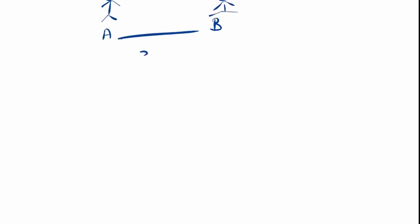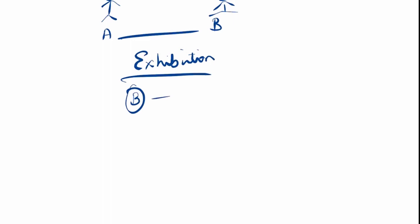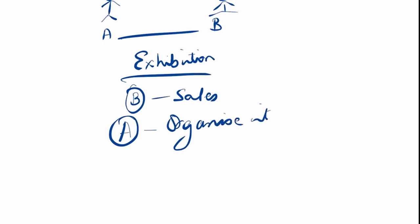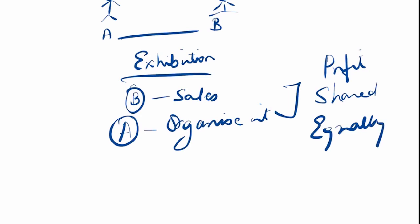Now why is it more complex compared to partnership accounts? Let me give a simple practical example. Let us say A and B decide to do an exhibition. B will be in charge of sales and A will be the person organizing it. The profit will be shared equally between A and B.